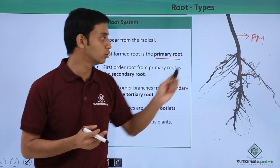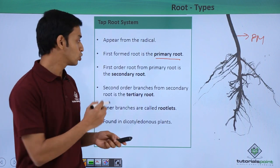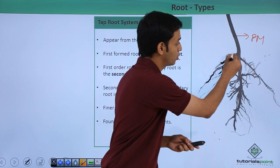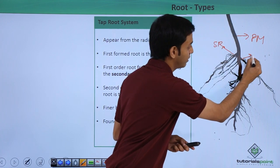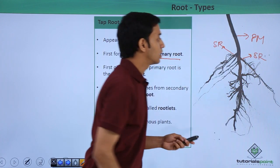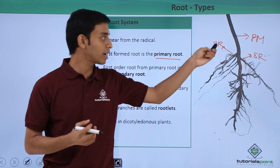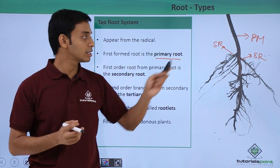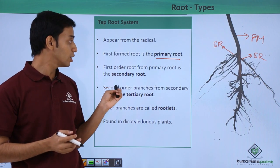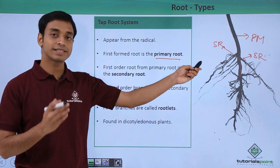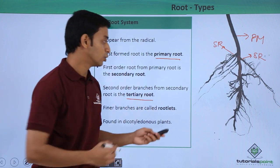From the primary root, branches of roots arise. These first-order roots formed from the primary root are known as secondary roots. The roots which arise directly from the primary root are the secondary roots. From the secondary roots, the second-order roots which arise are known as tertiary roots.